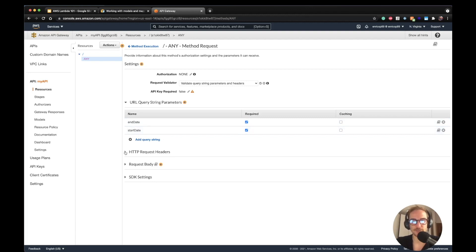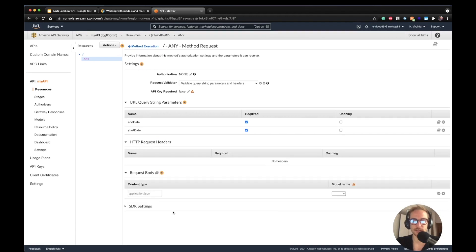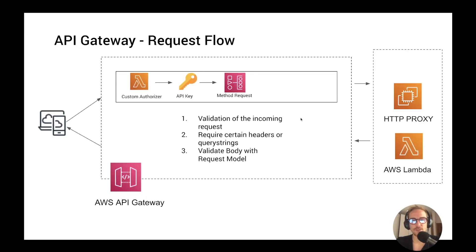Same thing for the request headers. And for the request body, as we said, we have to add a model. That's all for the method request step. Please let me know what you think in the comments, and follow the channel for other videos on API Gateway and serverless services. Thanks for watching.